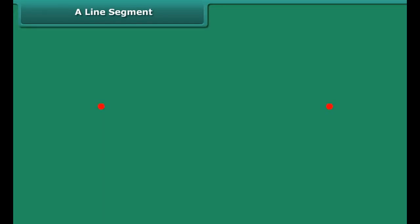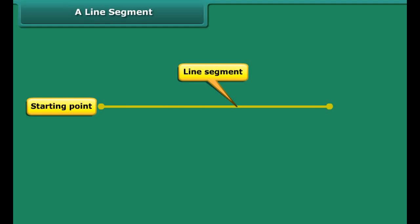The shortest distance between two points is known as line segment. Starting and ending of line segment are its end points. A line segment can be named by naming its end points. We can call this line segment as AB or BA.